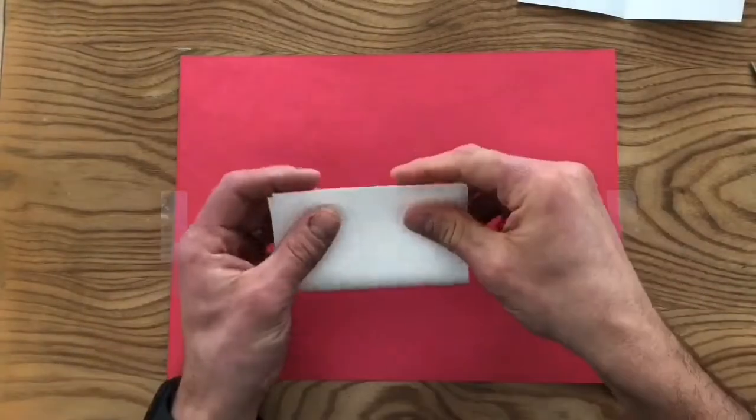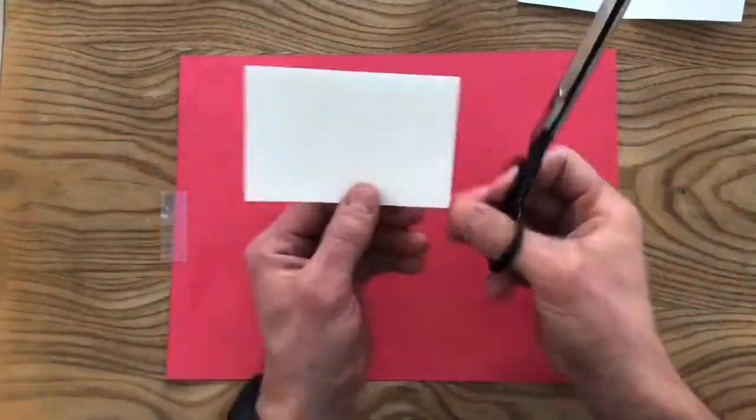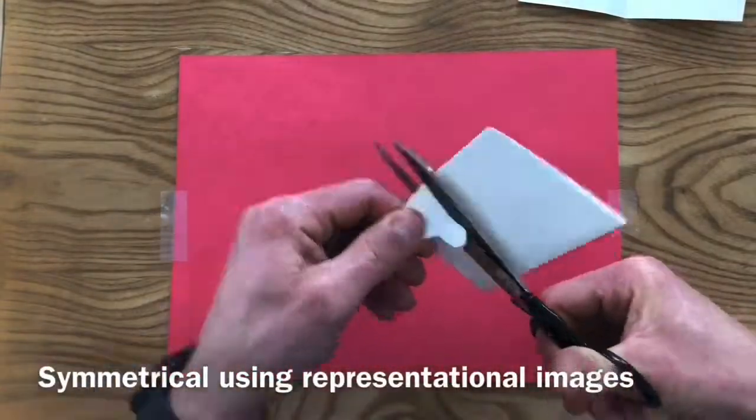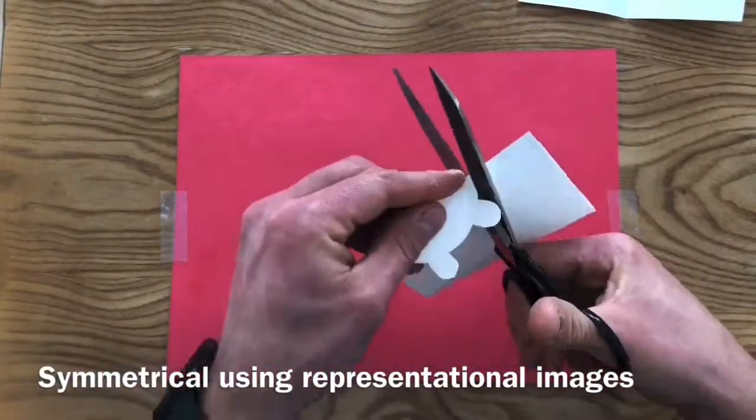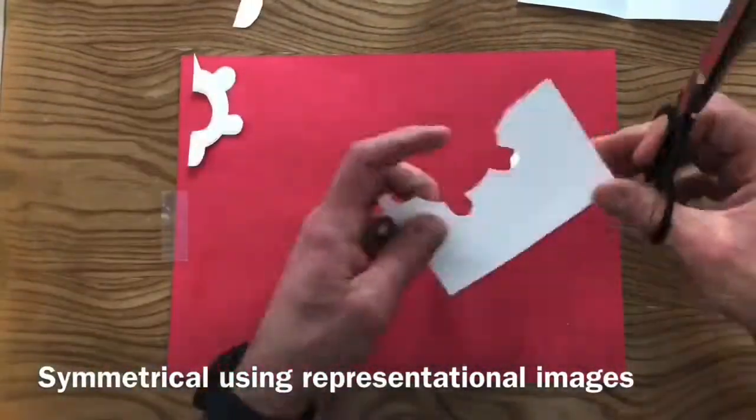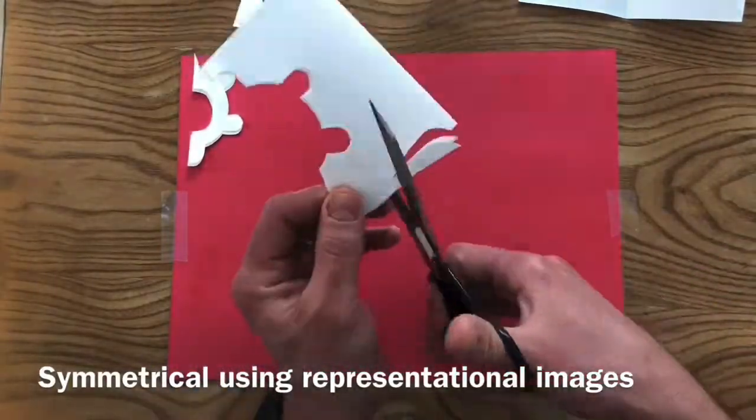For your second composition, you're going to be creating a notan that is symmetrical. Symmetrical means equal on both sides. Start by folding your paper in half so that whatever you cut out will be balanced and equal on both sides.